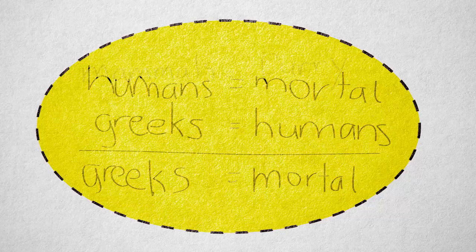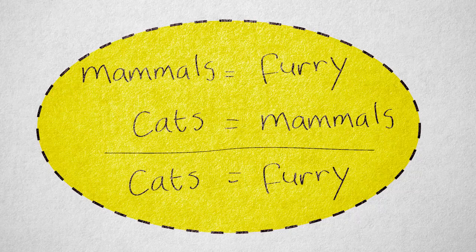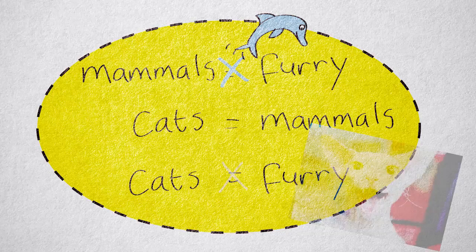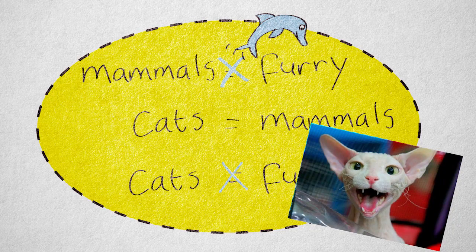Consider this one. All mammals are furry. All cats are mammals. Therefore, all cats are furry. The first premise is false, which means the conclusion is not necessarily true. Not a good basis for building knowledge.